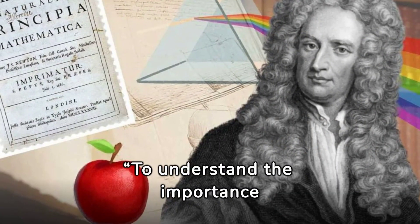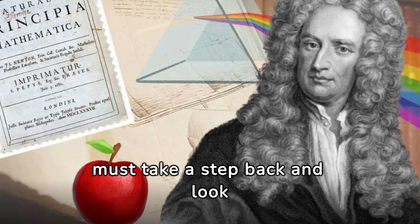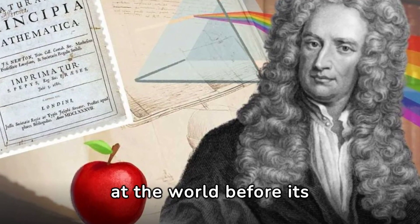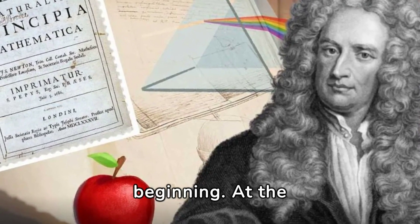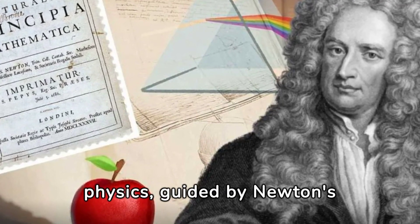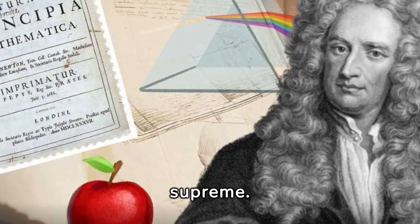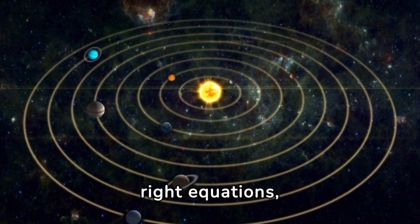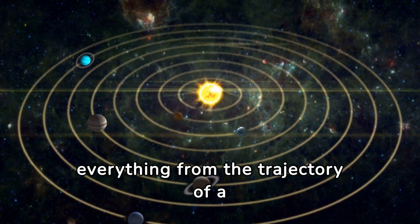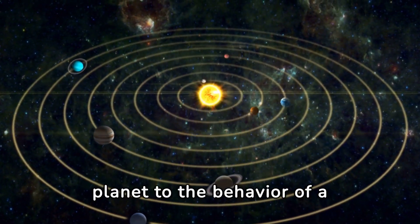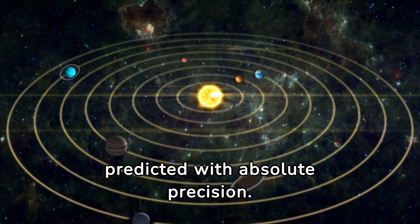To understand the importance of Heisenberg's work, we must take a step back and look at the world before its beginning. At the time, classical physics, guided by Newton's laws and Maxwell's theory of electromagnetism, reigned supreme. It was thought that with the right equations, everything from the trajectory of a planet to the behavior of a billiard ball could be predicted with absolute precision.